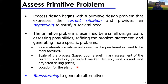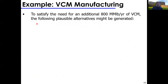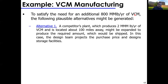Once you have specific problems, brainstorm and use back-of-the-envelope calculations to check feasibility. This is the point where a project is either born or abandoned. For example, VCM — vinyl chloride monomer — is used to make PVC, one of the most commonly produced plastics used in pipes and many other products. The primitive problem here is satisfying a need for an additional 800 million pounds per year of vinyl chloride monomer, and several plausible alternatives can be generated.